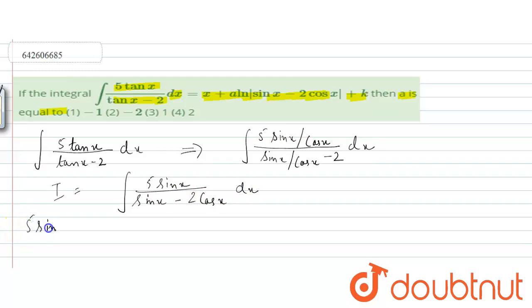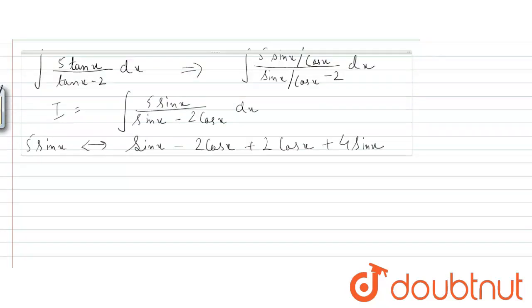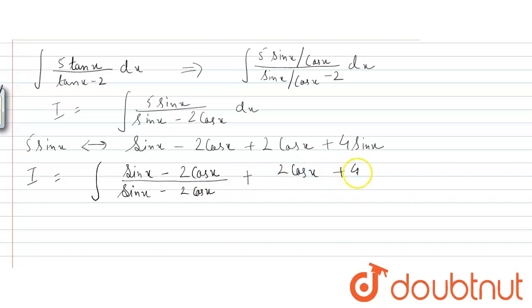Now, 5 sin x can be written as (sin x minus 2 cos x) plus (2 cos x plus 4 sin x). Substituting this, I equals the integral of (sin x minus 2 cos x) upon (sin x minus 2 cos x) plus (2 cos x plus 4 sin x) upon (sin x minus 2 cos x), all times dx.